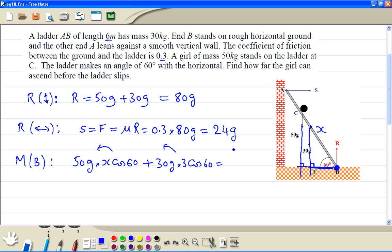Now this is equal to the clockwise moment. So this is the distance. This is the action force line. So this distance is the same as here. So S which is 24g times 6 sine 60.